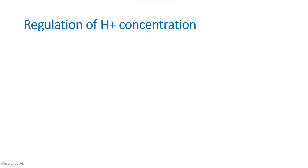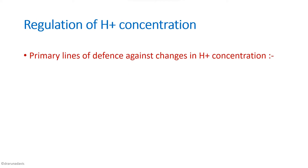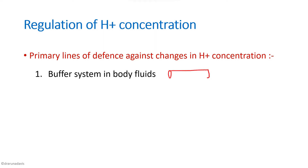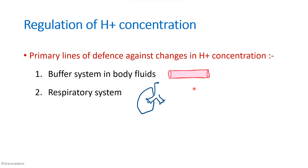How does the body maintain pH? The primary lines of defense against changes in H+ concentration are: first, the buffer system in body fluids, which acts immediately to correct pH changes; second, the respiratory system, which has the ability to flush out carbon dioxide — this in turn affects pH, and by that mechanism the respiratory system can bring back the pH to normal.